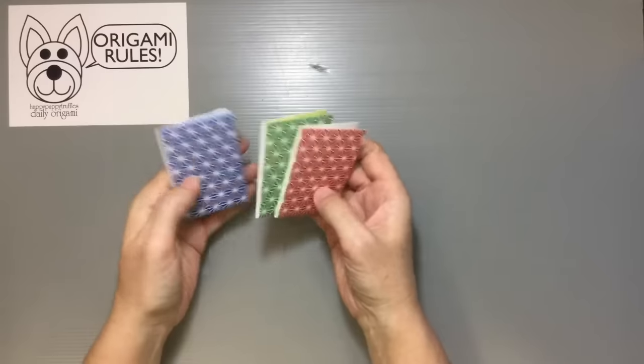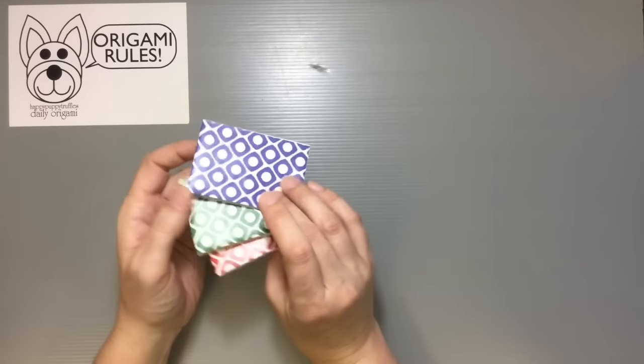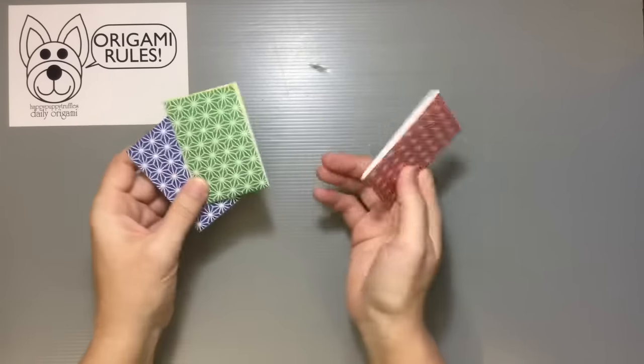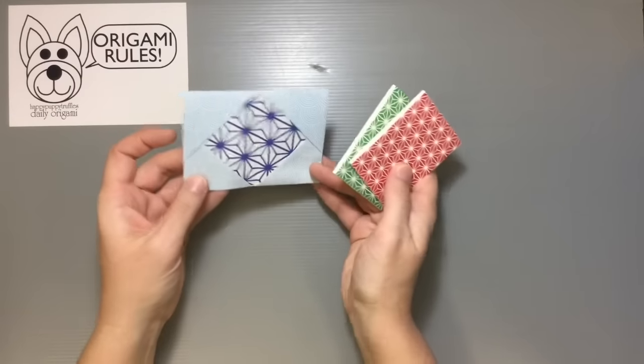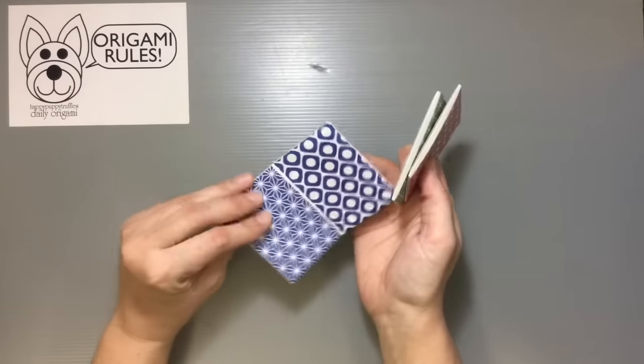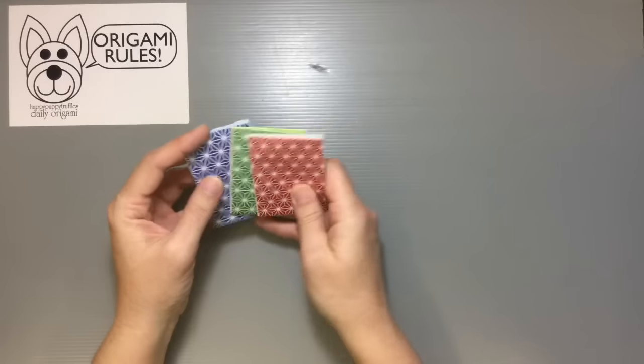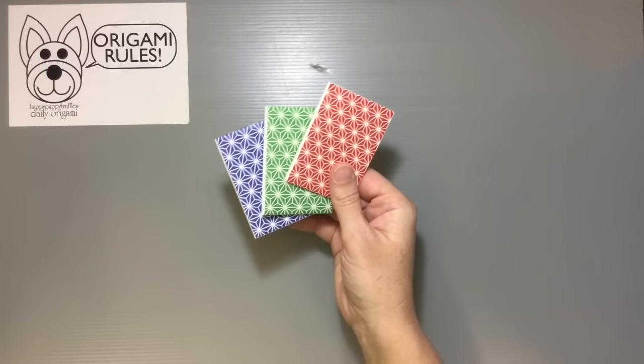Now this is in a series of patterns that are sort of representative of traditional origami pattern papers. They have lots of fun different traditional geometric shapes that you might see. There's actually four different color variations.